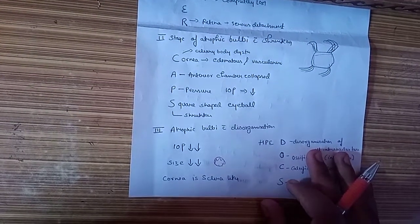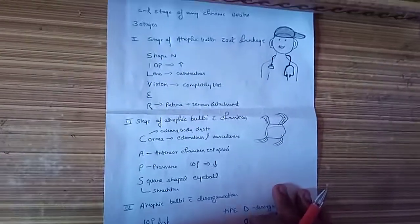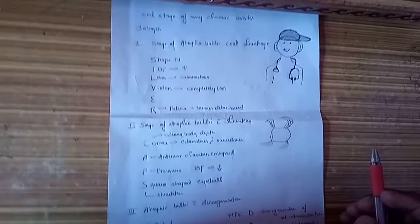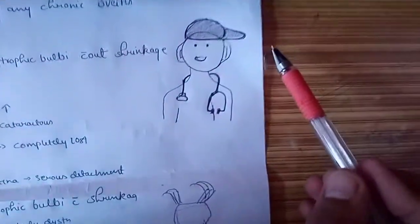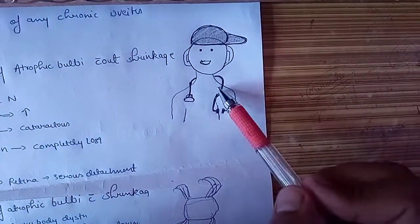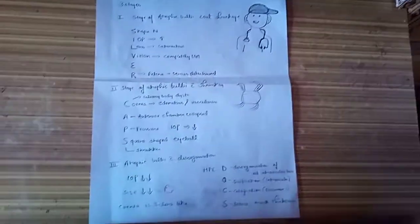Cornea becomes sclera-like, meaning the color of the cornea is similarly white as that of the sclera. This is what is Phthisis Bulbi, and it becomes really very easy when you remember the mnemonic with this guy: SILVER CAPS, a DOCTOR. Thank you.